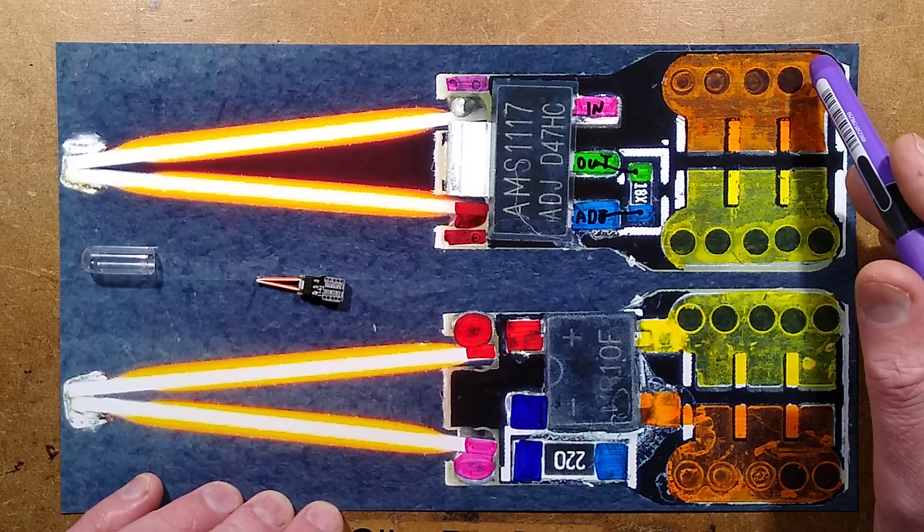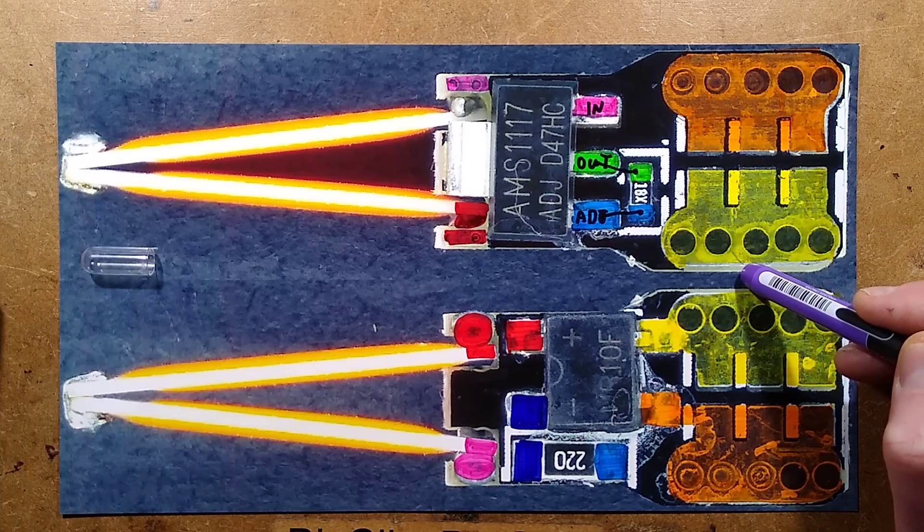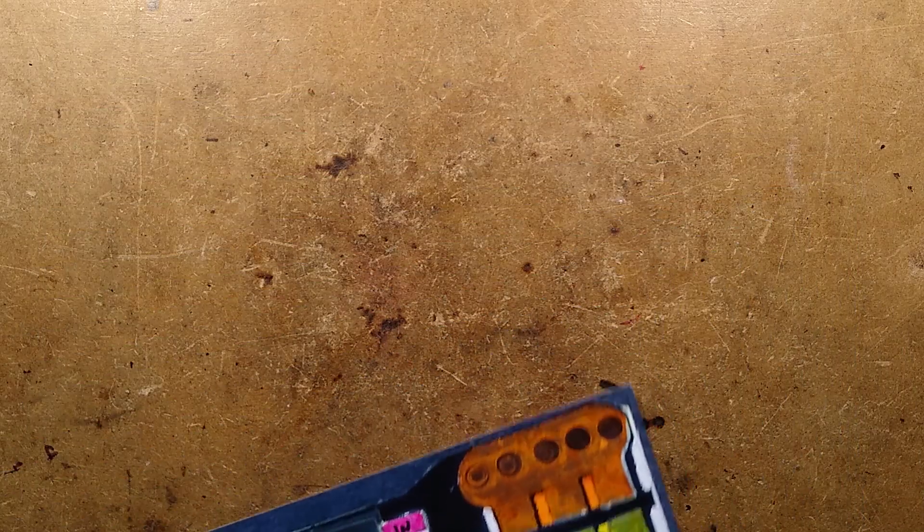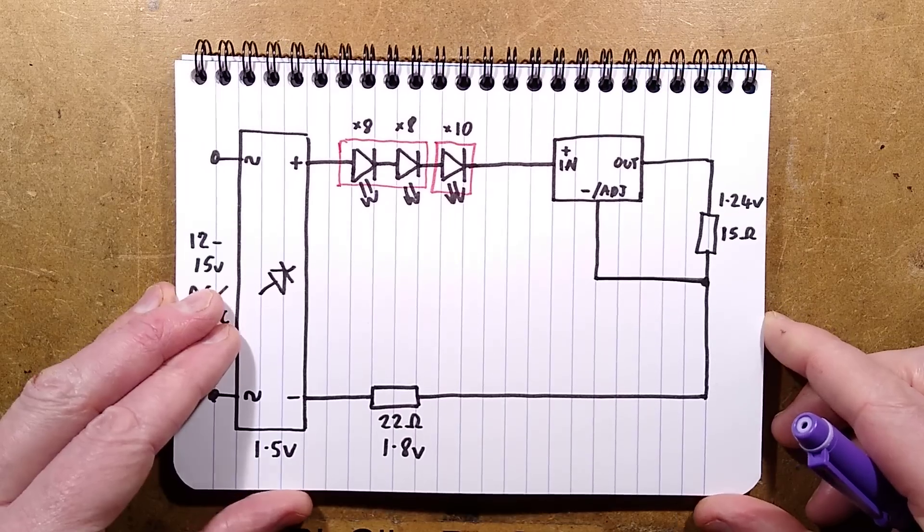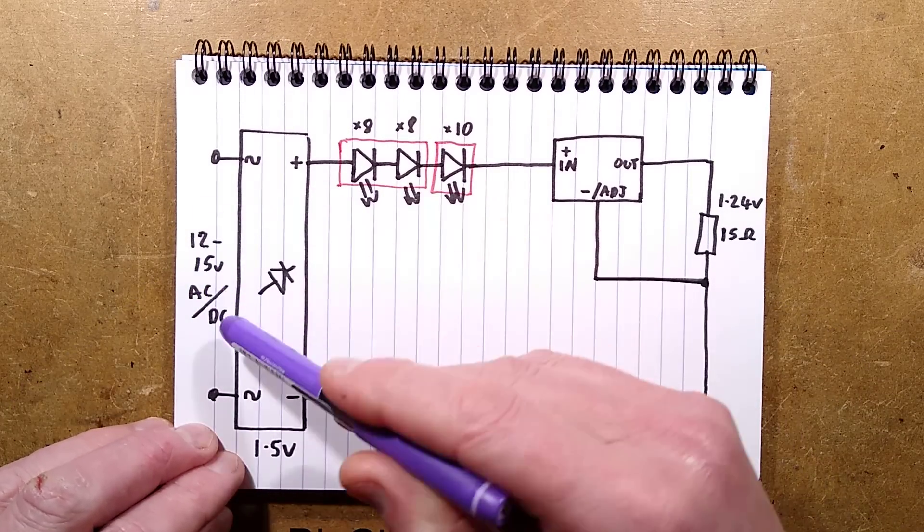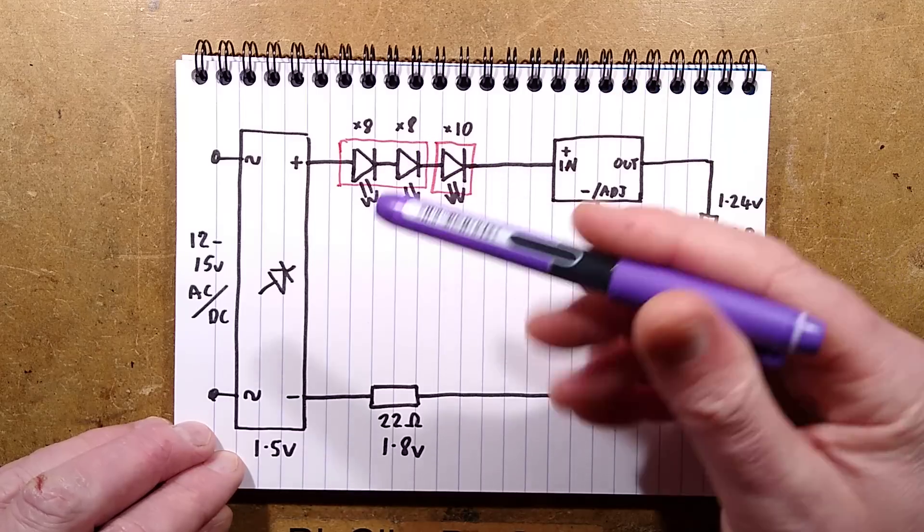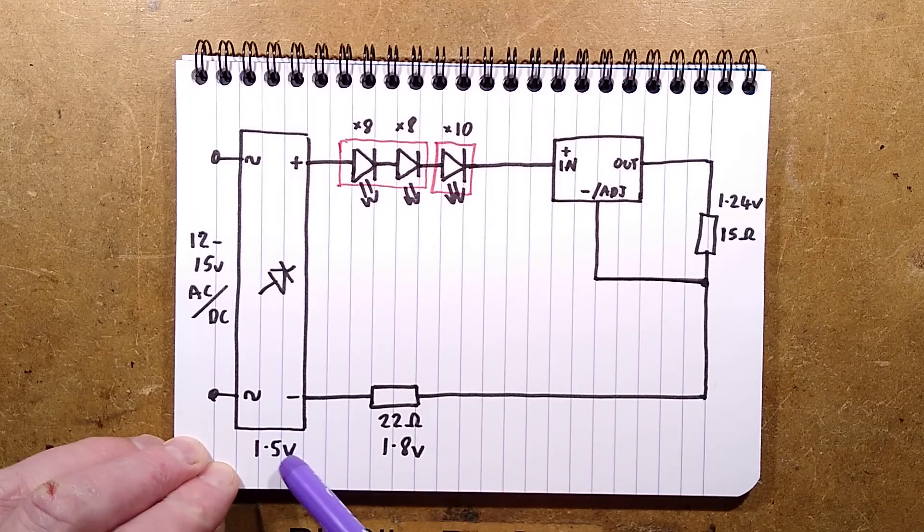I'll bring in the schematic and explain it all. Here's the schematic. So here's the incoming supply. It can be quite a wide voltage range because it is current regulated. It goes through a bridge rectifier which will drop roughly 1.5 volts.